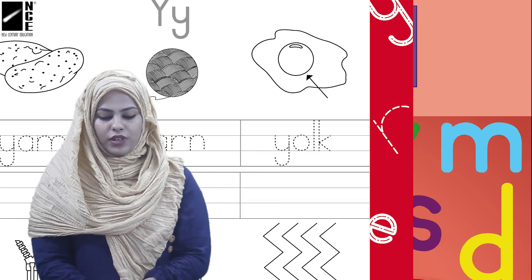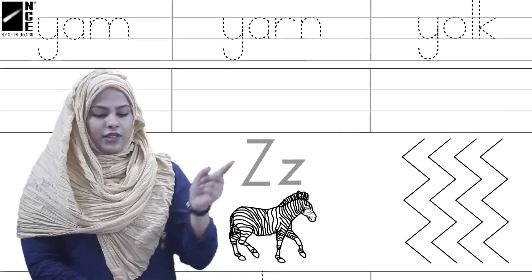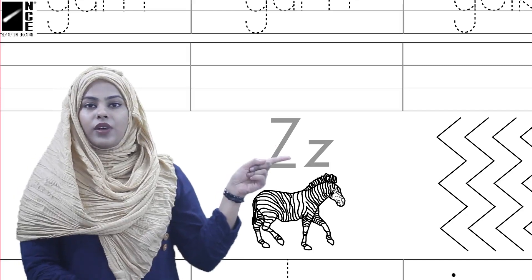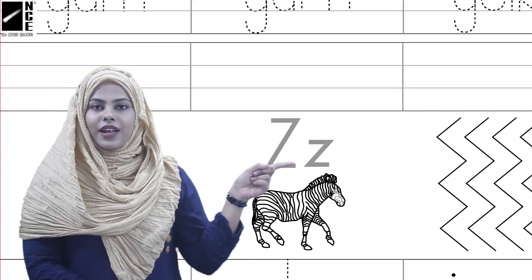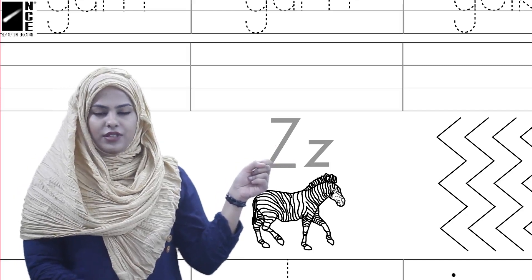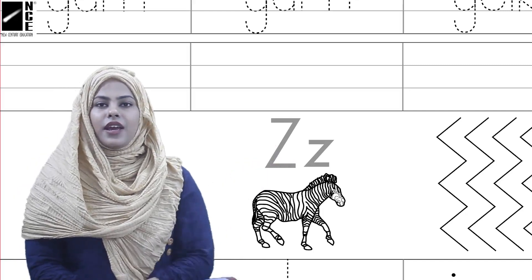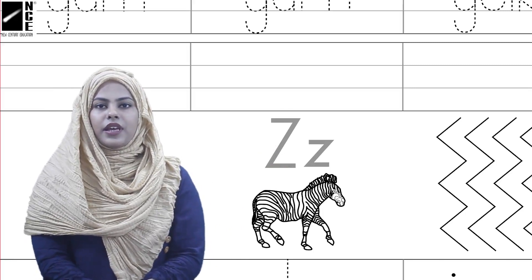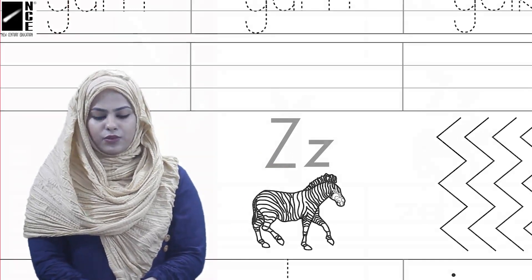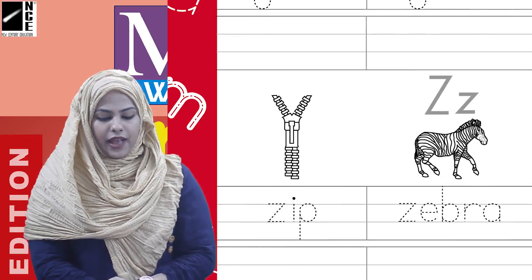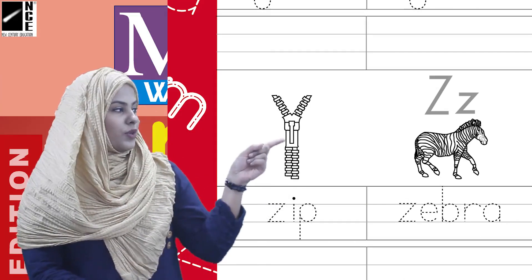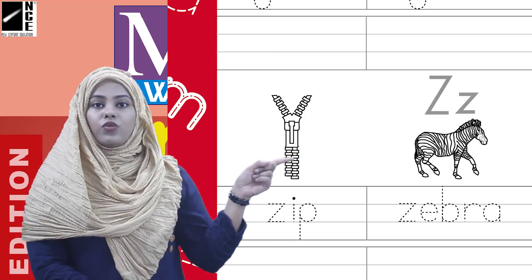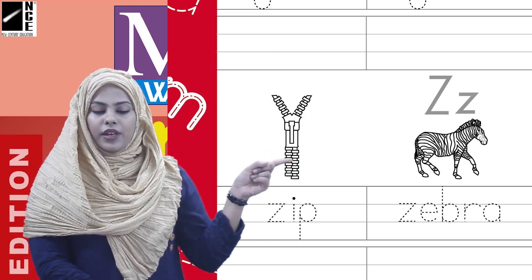Now move on to the next letter. Look over here, kids — we have another letter, which is letter Z. We have capital Z and small z over here. And look at the first picture — hame yahan par bhi kuch vocabs di hoi hai.